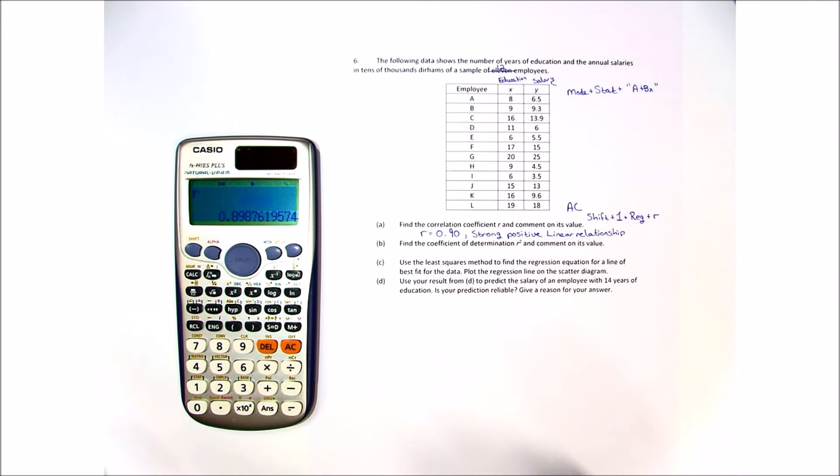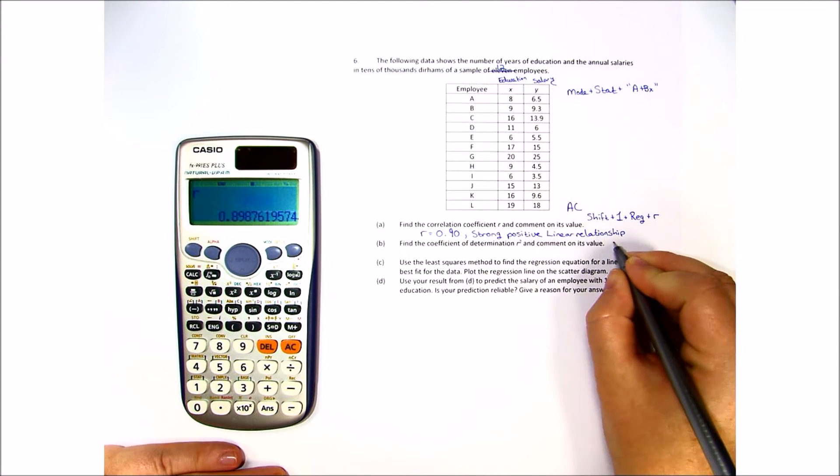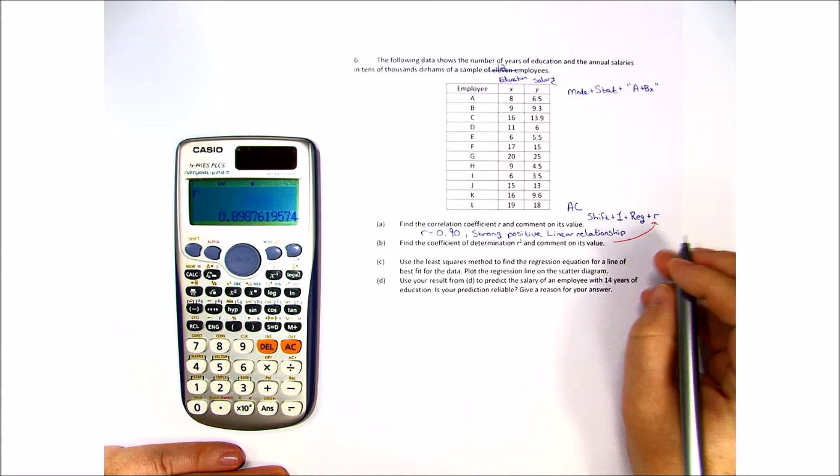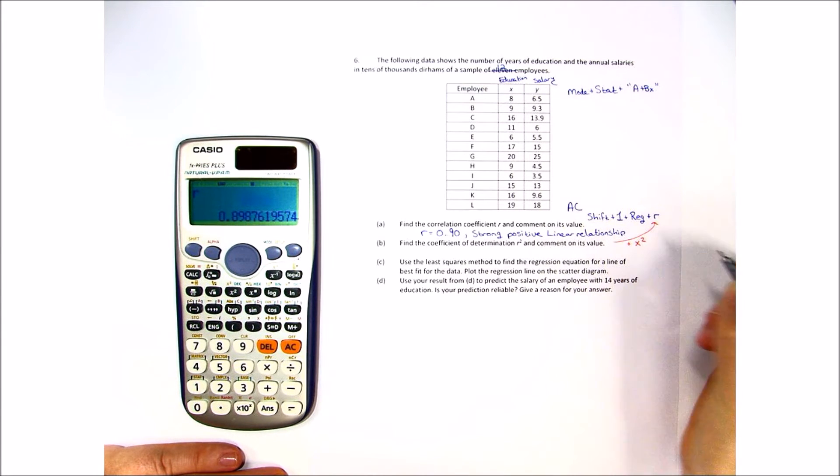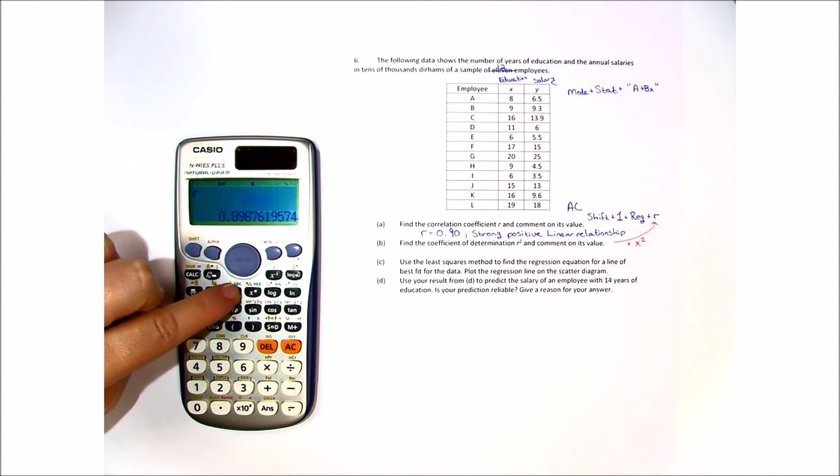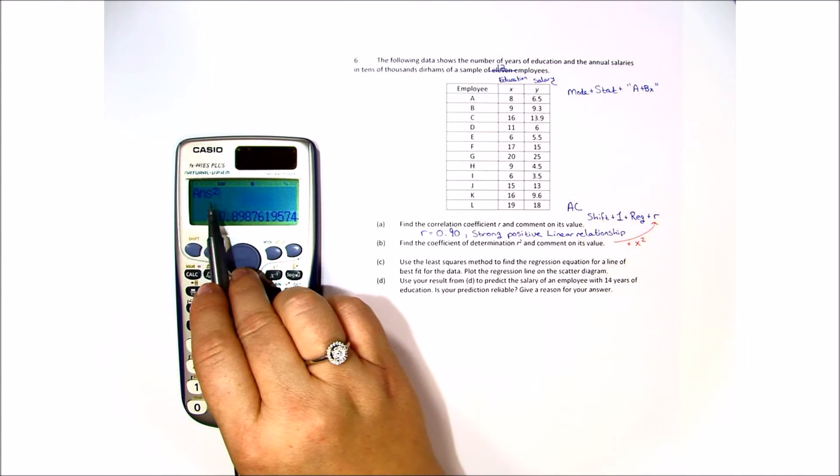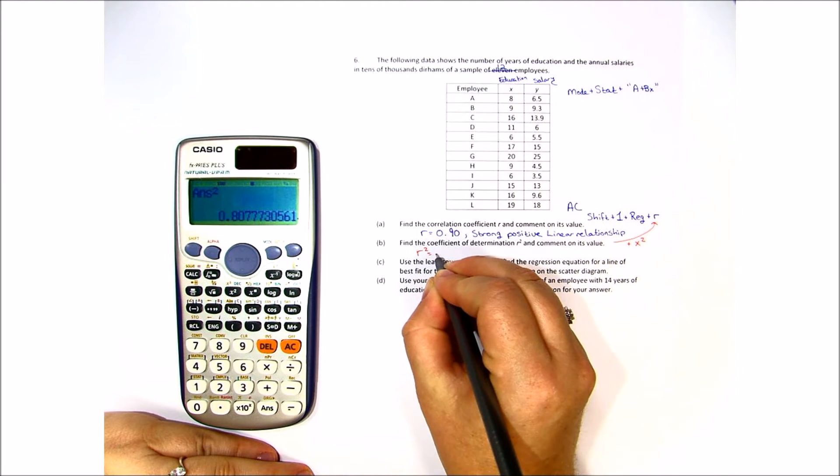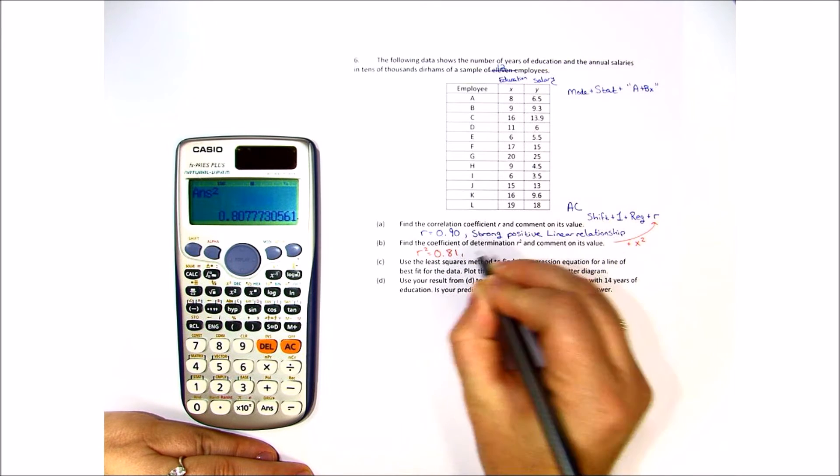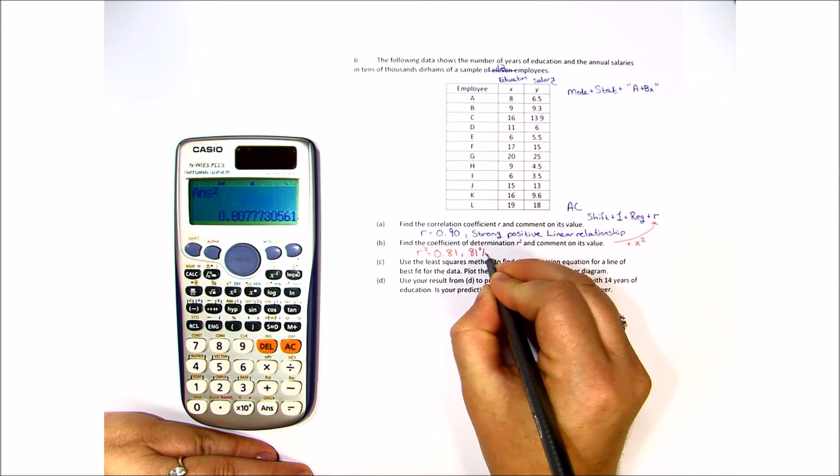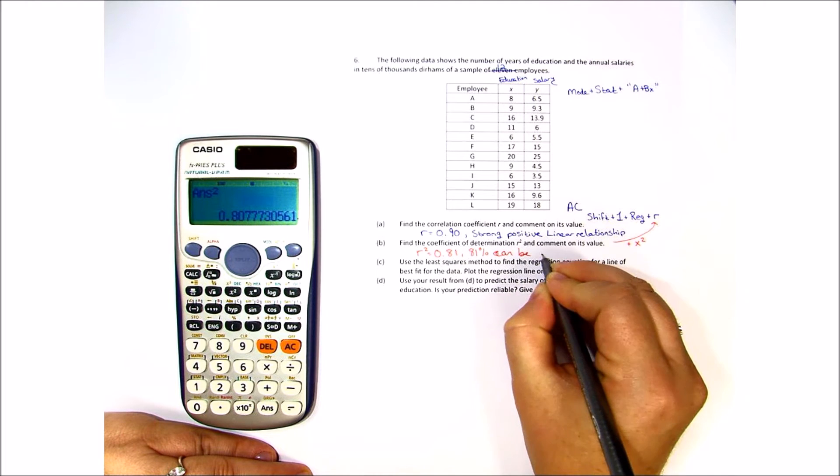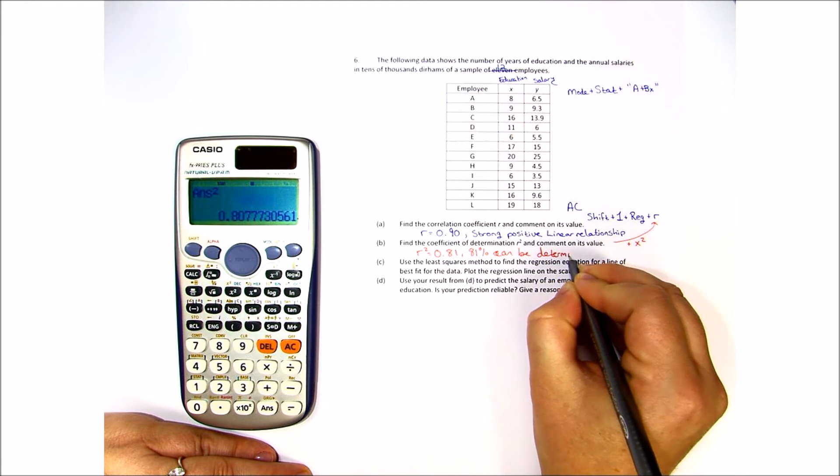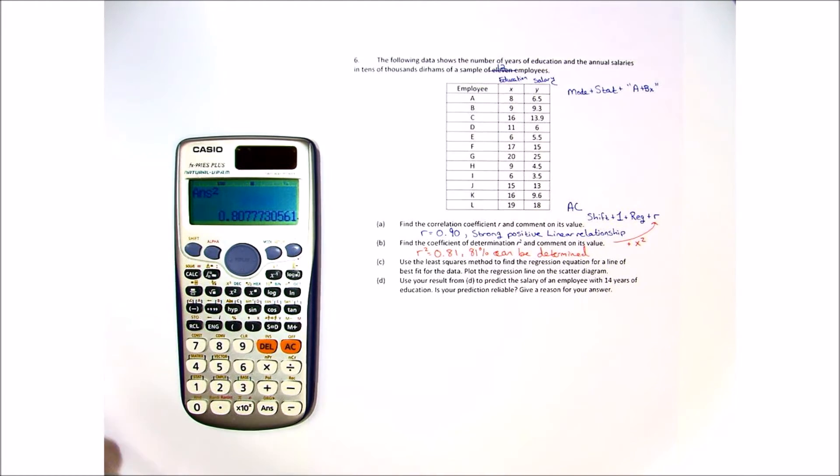The next question says find the coefficient of determination r squared and comment on its value. To do this all you have to do is what you did up there and then hit the x squared button. We've already gone through this so I'm just going to hit the x squared and it takes whatever answer I just found and squares it. So we get r squared is equal to 0.81. In other words, 81% can be determined based on the information and the equations that I get.